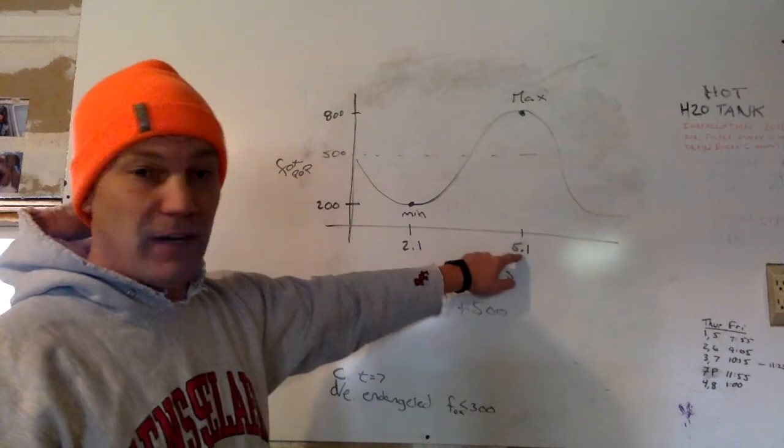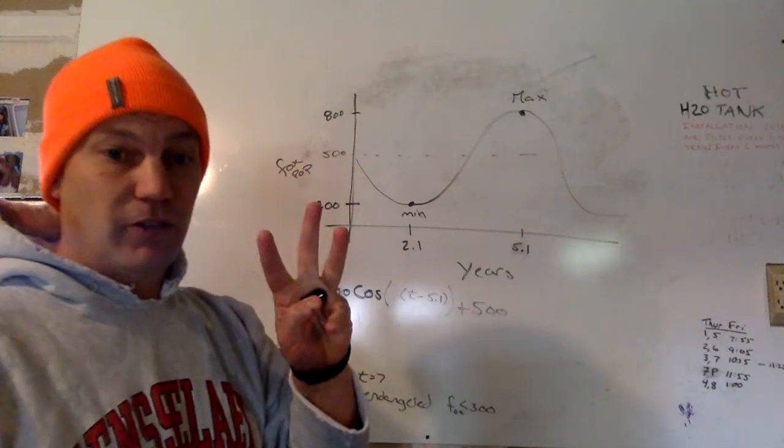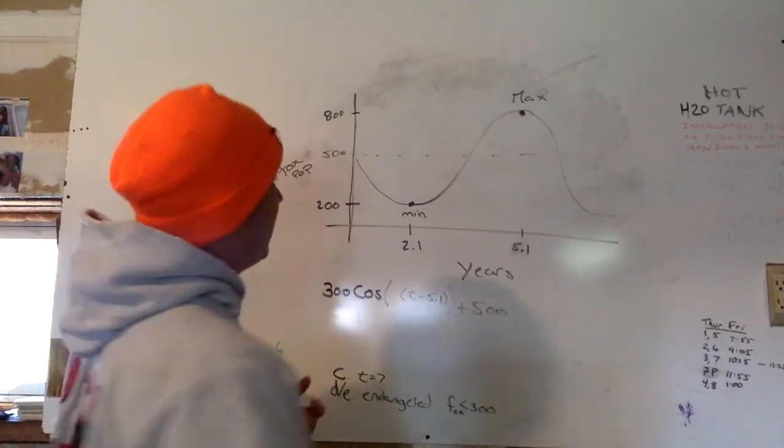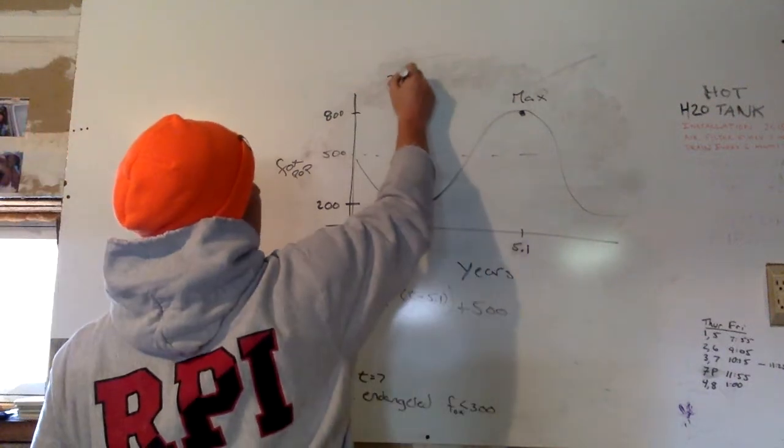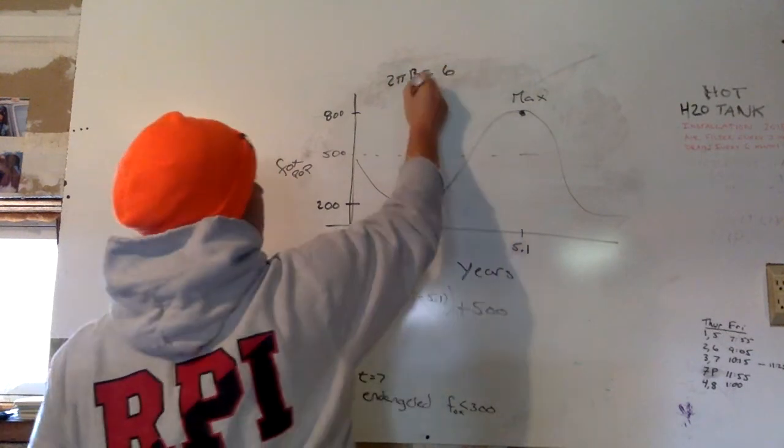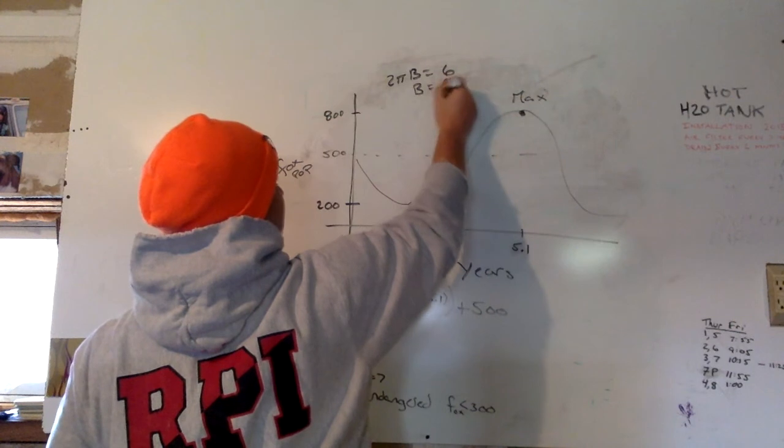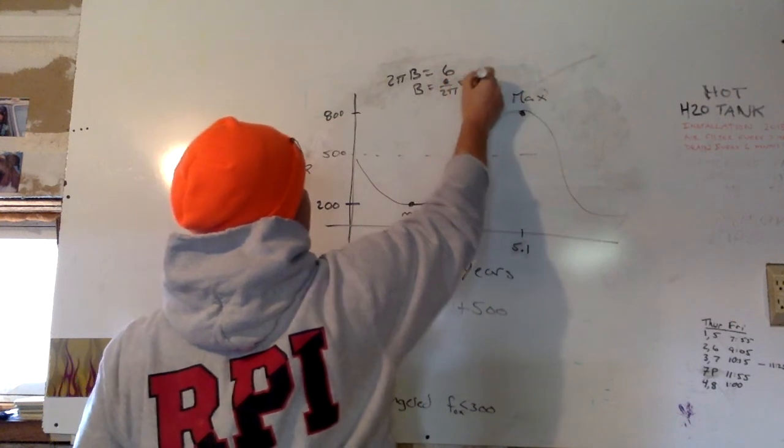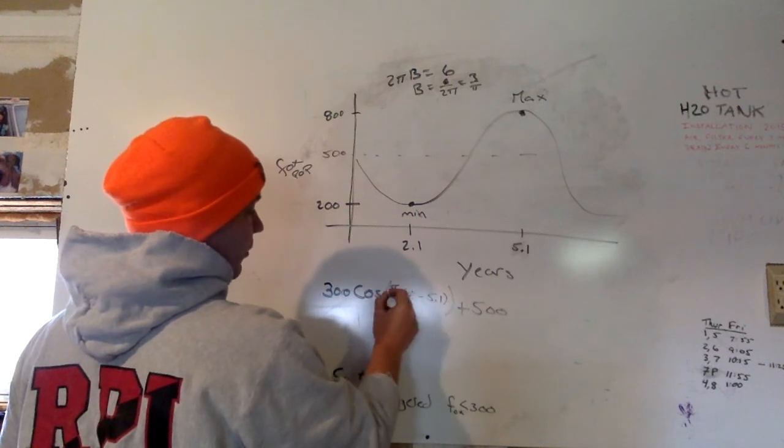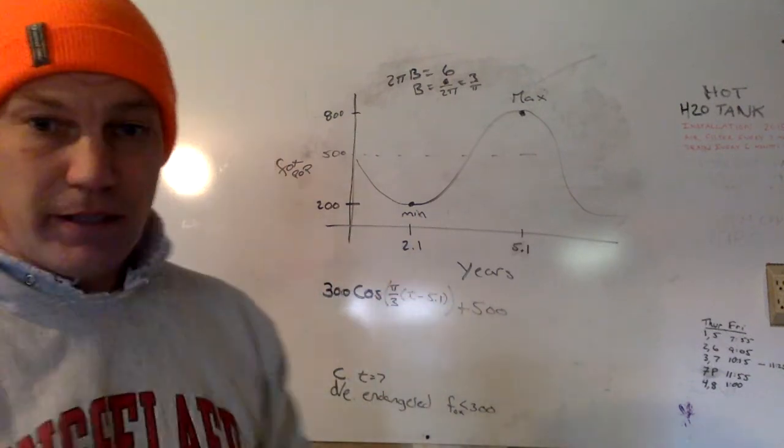I know 2.1 to 5.1, that's 3 years. And that looks like half my period, so my period is 6 years. So we remember that 2π/b equals the period, which is 6. b is 6 over 2π, which is 3 over π. And we know that it's 1 over b here, so it's π over 3.